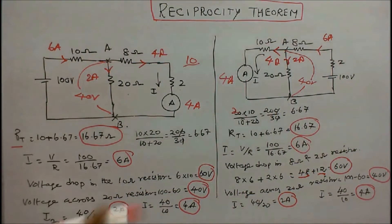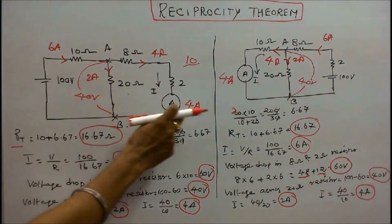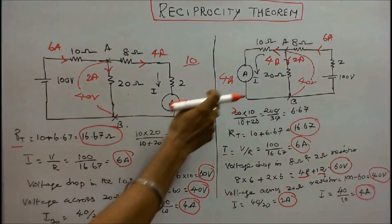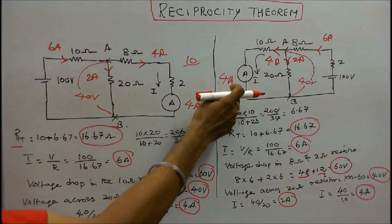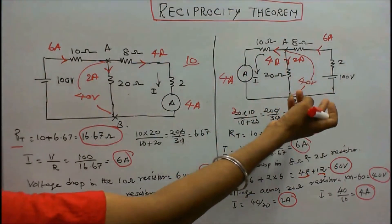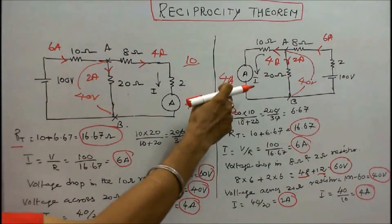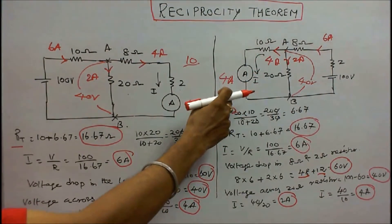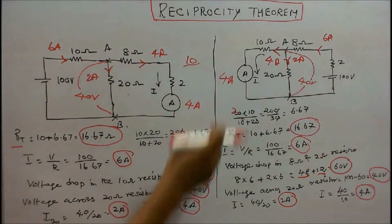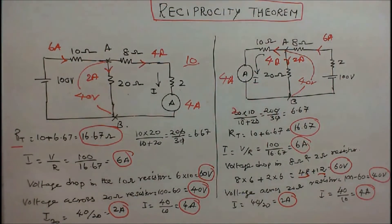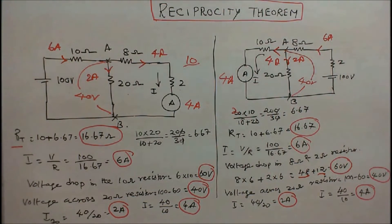In both circuits, the ammeter reading is 4 amps. By interchanging the voltage source and the ammeter, the current reading remains the same. Therefore, the Reciprocity Theorem is verified. With this, I conclude my lecture. Thanks for listening. I'll see you next time.